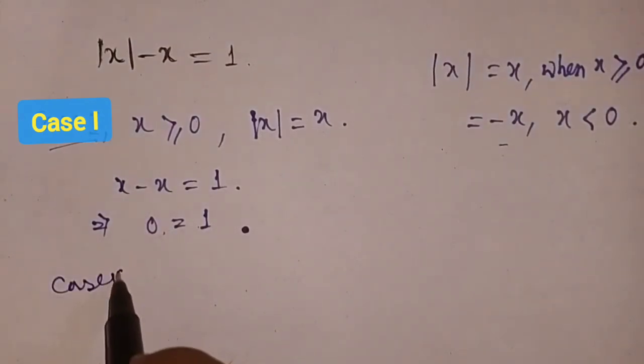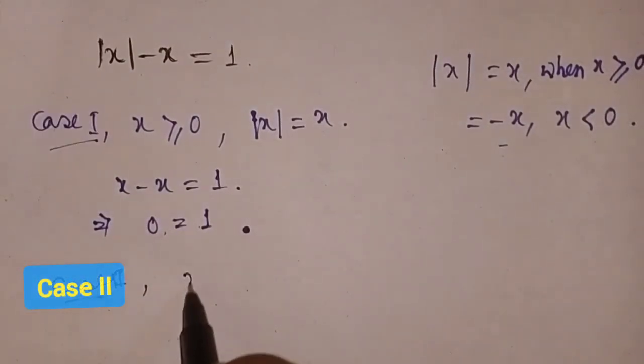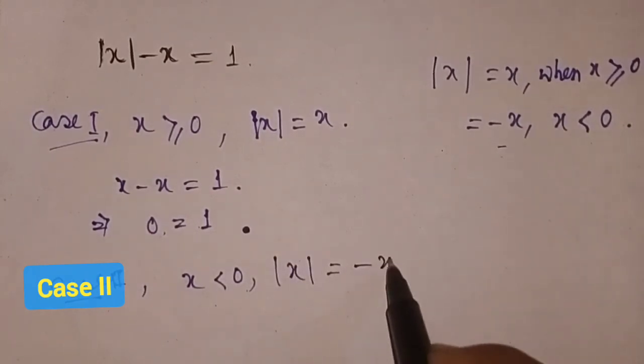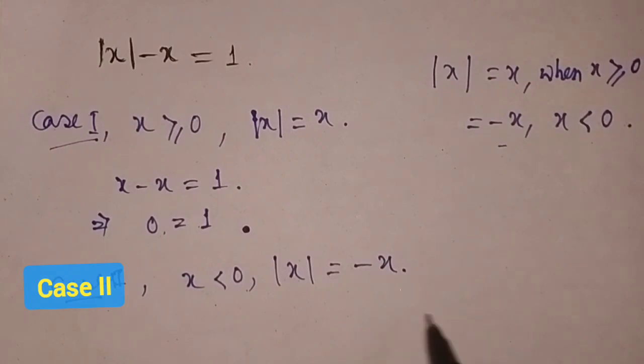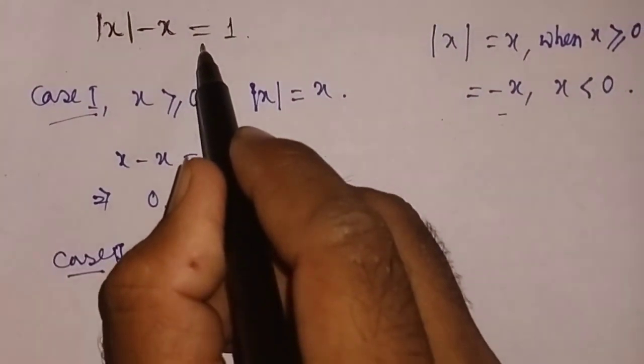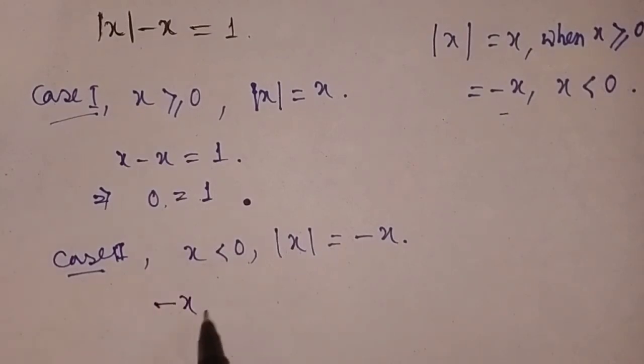when x is less than 0, |x| is equal to -x, and in that case the equation reduces to -x - x